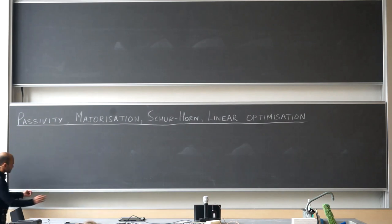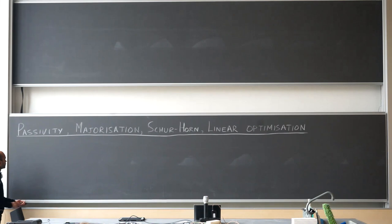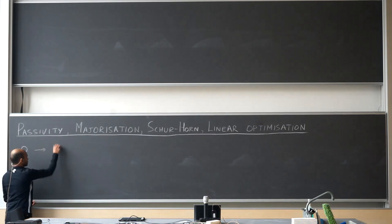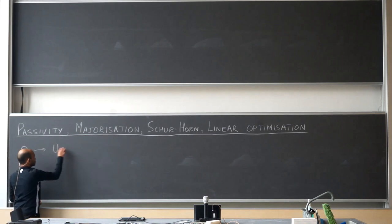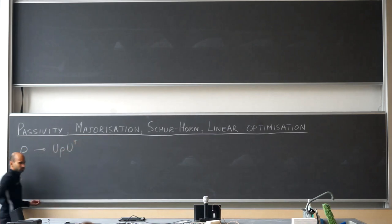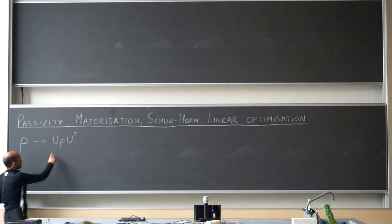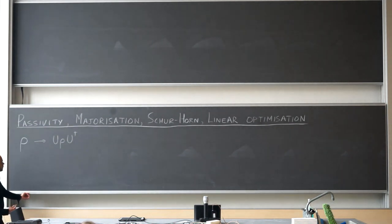Let's start first with passivity. This is a very simple concept. Imagine I have a state rho, and I can transform it — I'm allowed to transform it via any unitary operation. We can consider all possible unitary operations and ask which of them lowers the energy of rho the most.